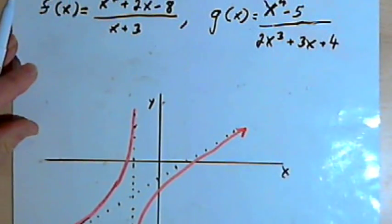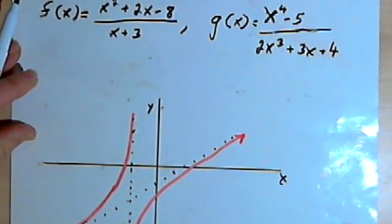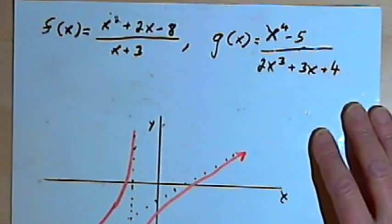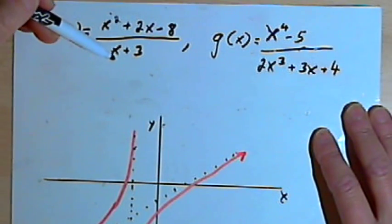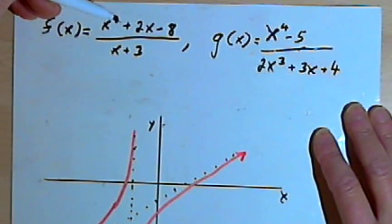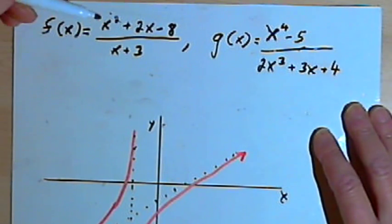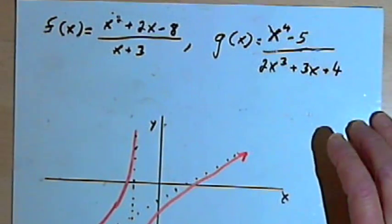To find the slant asymptote, the process is fairly simple. All you do is divide the denominator into the numerator and disregard any remainder that you might have. Let's see some examples.